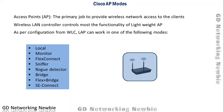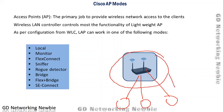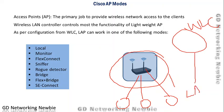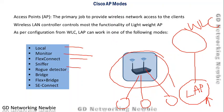In this video we are going to discuss Cisco access point modes. The primary job of an access point is to provide wireless network access to clients such as mobile devices and laptops. A wireless LAN controller controls most of the functionality of lightweight access points, based on the split access point architecture. As per configuration from the WLC, a lightweight access point can work in one of the following modes.